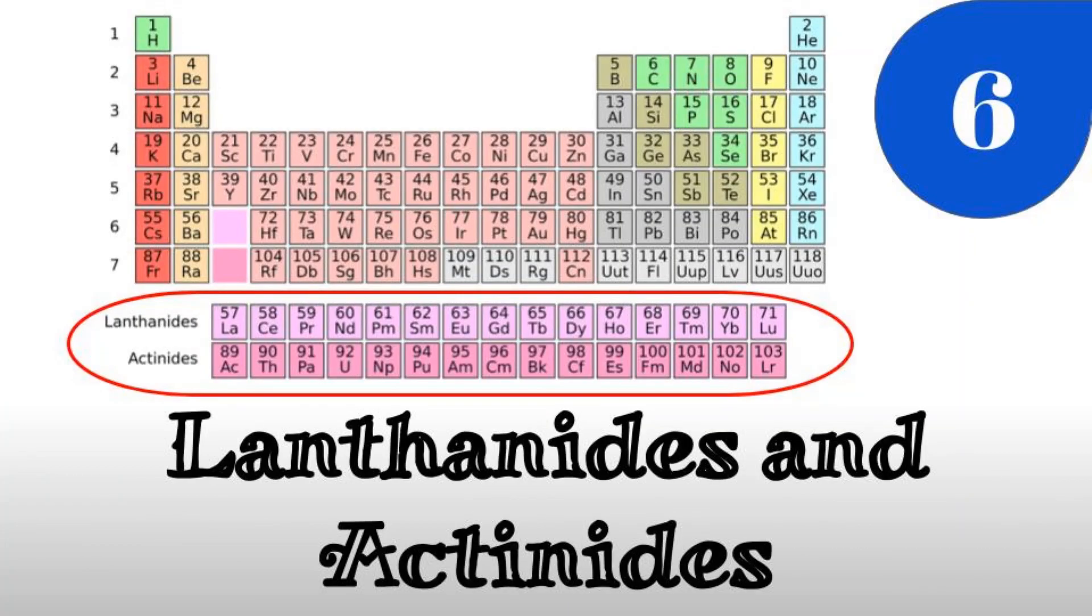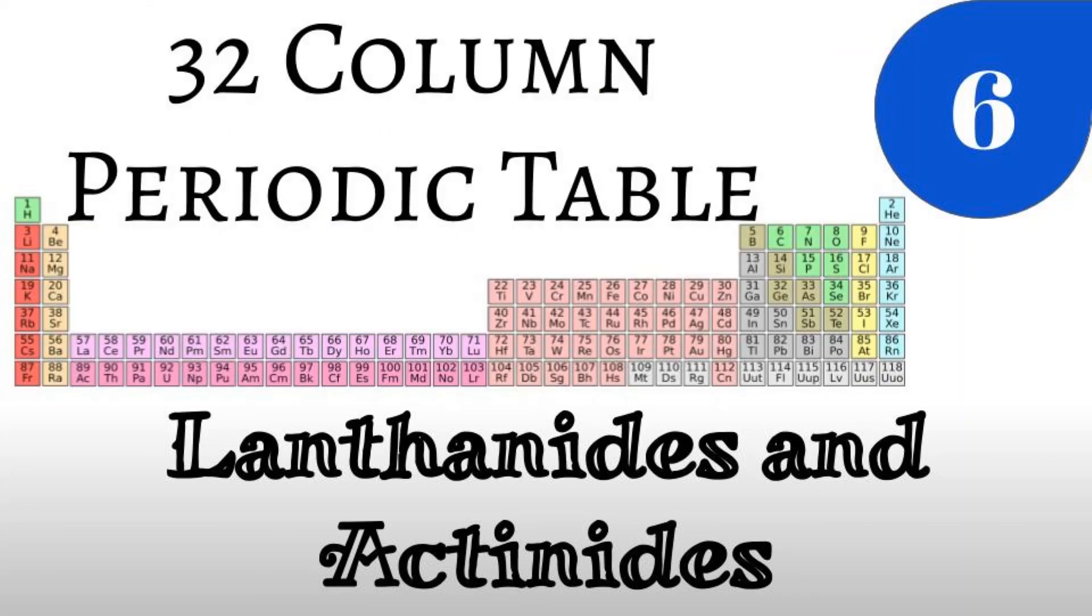Number six: Lanthanides and actinides. The reason the lanthanides and actinides are at the bottom of the periodic table is to save space. There is a 32-column periodic table with the lanthanides and actinides inserted, but as you can see, people prefer the other table as it saves space and fits better in a textbook.